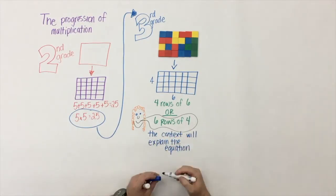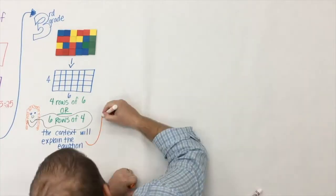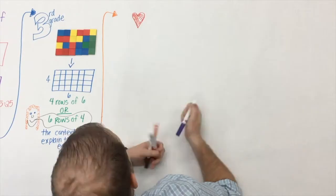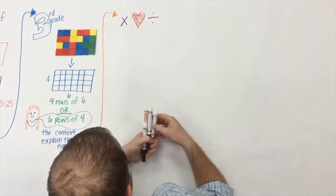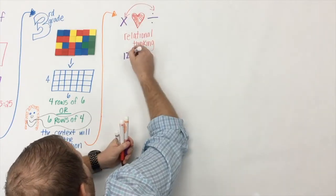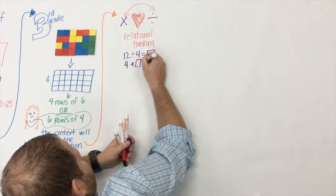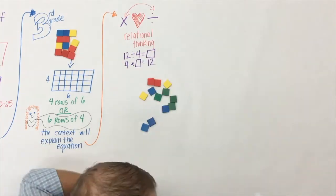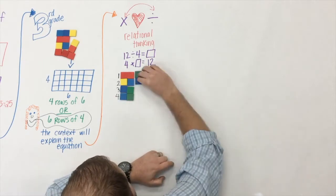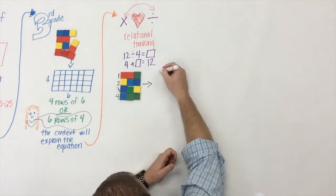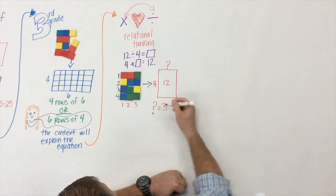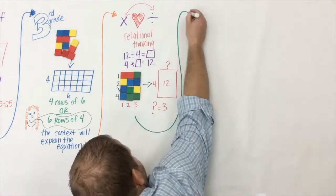The big piece is that we don't push an understanding on students — we let students explain what their model represents. The context will explain the equation, not the teacher. Then we come to the biggest piece in third grade: the relationship between multiplication and division. For example, 12 divided by 4 — if we take 12 tiles and put them in four rows until we run out, we see three in each row. Arrays can be used for both multiplication and division.